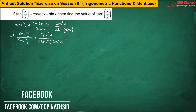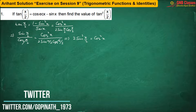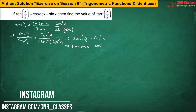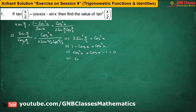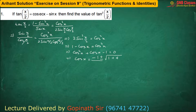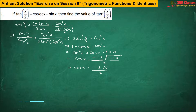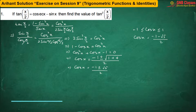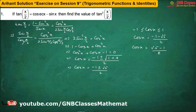Now I am cancelling cos(x/2) from both sides, we get. Since cos x always lies between minus 1 and 1, hence rejecting the value (−1 − √5)/2, so we are getting cos x as (√5 − 1)/2.